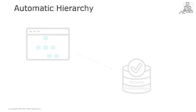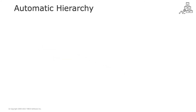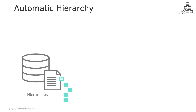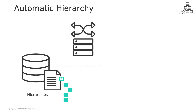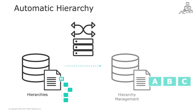Another interesting feature in this release is the automatic hierarchy management. Hierarchies are generated automatically based on the selected attribute values in the record. Defining hierarchies for a large volume of data reduces the effort of manually linking the records.